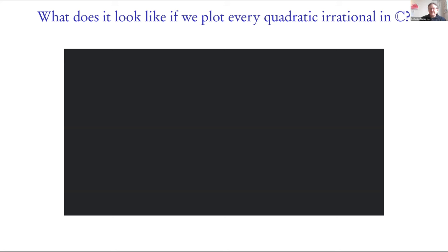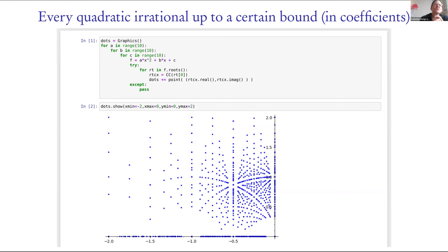One thing you might think to do is just start trying to actually plot them. Imagine you write the simplest possible Python program and go through, as a loop, the possible coefficients of your polynomials, then plot the roots. Here's what happens if you do that. In Sage, I'm just going through a, b, and c, making the polynomial ax² + bx + c, then plotting the roots — only going through a, b, and c up to 10. And you can see now that there's really something going on: there's some structure to these roots.